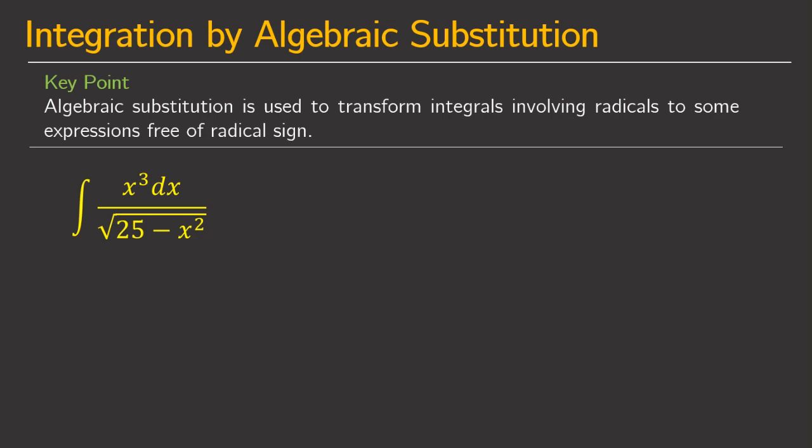Sometimes integrating algebraic functions containing radicals is too tedious and complicated, so we have a method to simplify the process. That method is integration by algebraic substitution. Algebraic substitution is used to transform integrals involving radicals into expressions free of a radical sign.